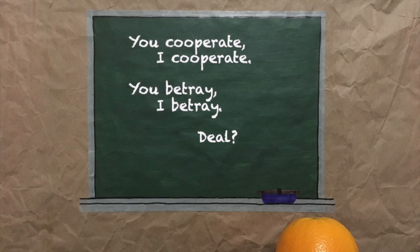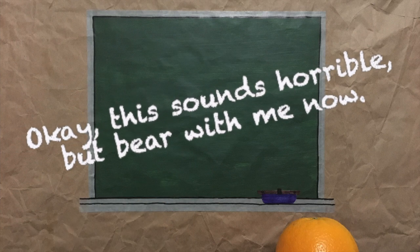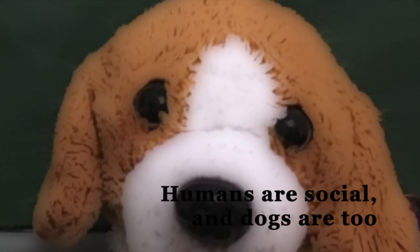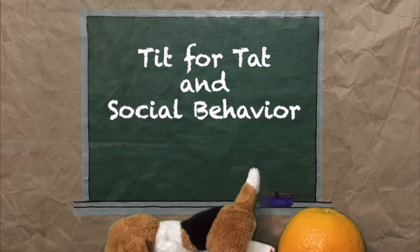If you cooperate, I cooperate. If you betray me, then I betray you. It's roughly this strategy that's called tit for tat. But what's tit for tat got to do with understanding social behavior?